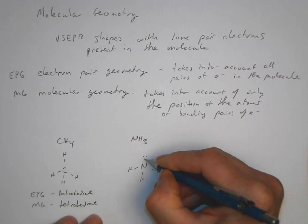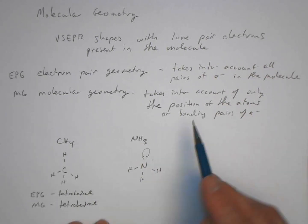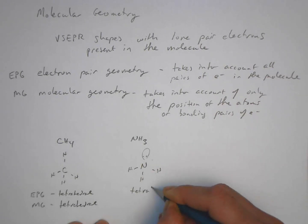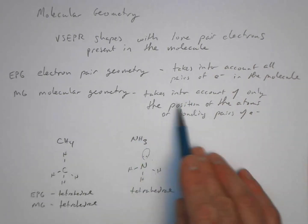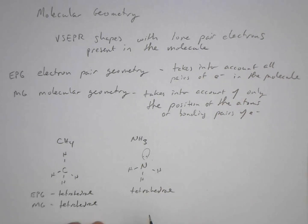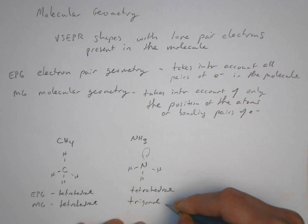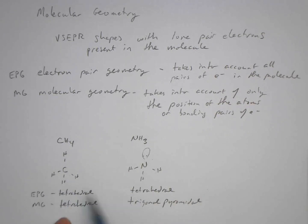Let's contrast that with the ammonia molecule, where we have one lone pair of electrons and three bonding pairs. The electron pair geometry — we simply ask how many electron pairs there are. There are four, same as methane, so the electron pair geometry is tetrahedral. The molecular geometry, on the other hand, can't be tetrahedral, because with molecular geometry we're only taking into account the position of the atoms. So it's going to be different — we call this trigonal pyramidal. The point here is that both molecules have the same electron pair geometry, but their molecular geometries are different.